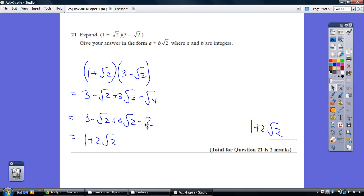So let's then gather up our normal numbers. 3 take away 2 is 1, and 3 lots of root 2 take away 1 lot of root 2 is 2 lots of root 2. So that's our final answer. 1 plus 2 lots of root 2.